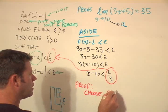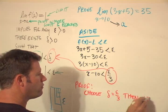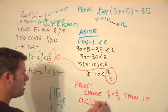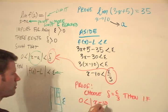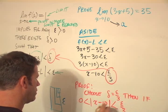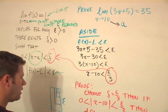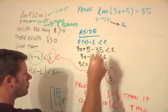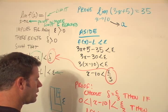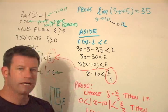Choose delta equals epsilon over 3. Then if 0 less than the absolute value of x minus 10, because that's our a value, less than epsilon over 3, if that, then the absolute value of f of x minus 35 is less than epsilon. So there's the actual statement of proof.